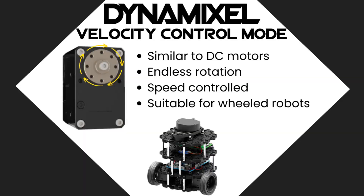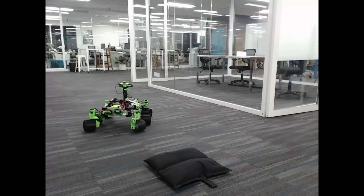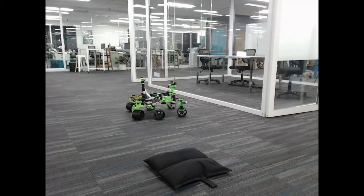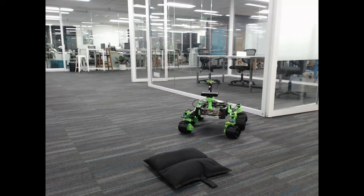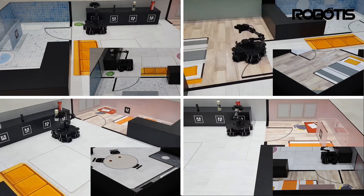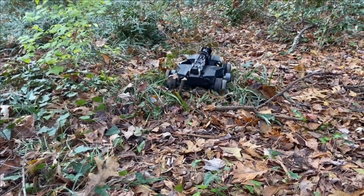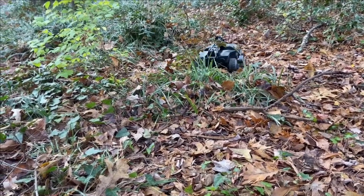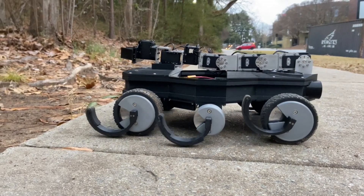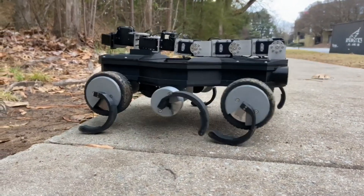Velocity mode provides operation similar to a standard DC motor — endless rotation with controllable output speed in both directions. This mode does not support the specification of a desired goal position, but the present position control table item continues to report the actuator's position. When operating multiple models of Dynamixel in velocity mode, it's important to note that different models have different minimum and maximum rotational speeds, so similar goal values may produce different output speeds depending on the specific model. Velocity mode is best suited for use as a drive solution for a wheeled robot, as in the TurtleBot 3 ROS research robot.